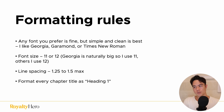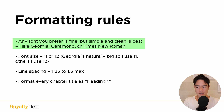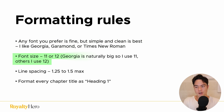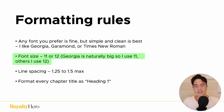Let's quickly go over some formatting rules. Any font you prefer is fine, but a simple and clean font is best. My favorite fonts are Georgia, Garamond, or Times New Roman. For font size, I recommend you stick to 11 or 12. Georgia is naturally big as a font, so I use size 11, but for others I use size 12. Right now I use Garamond font size 12 for all my books.